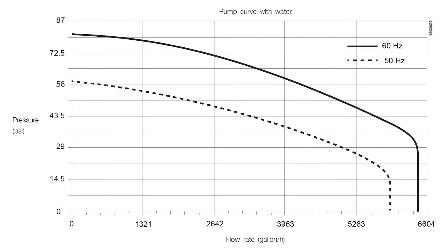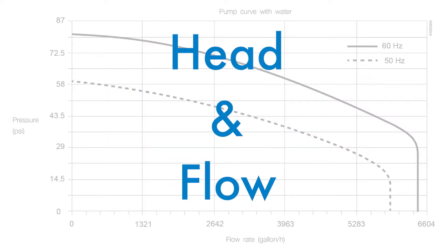A basic pump curve provides two pieces of information about the pump's capacity to move water: head and flow.